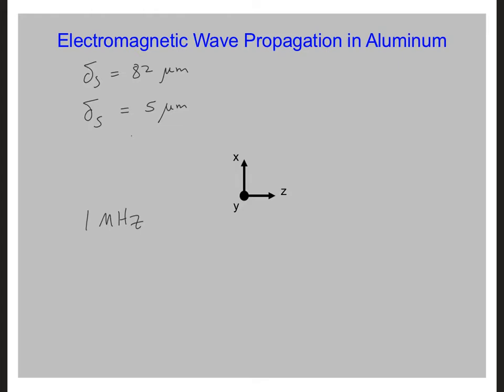Now, normally, we might be tempted to just draw a sinusoid with a decaying amplitude. So here, if we consider z equals 0 as our starting point, then it might be tempting to draw something like this, where the amplitude decays exponentially.